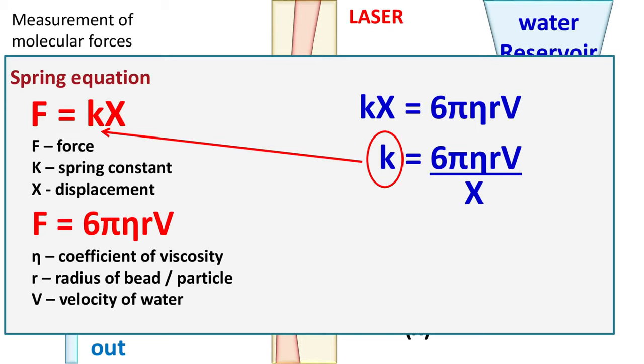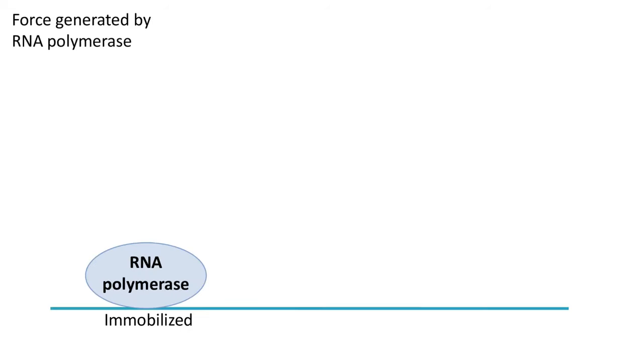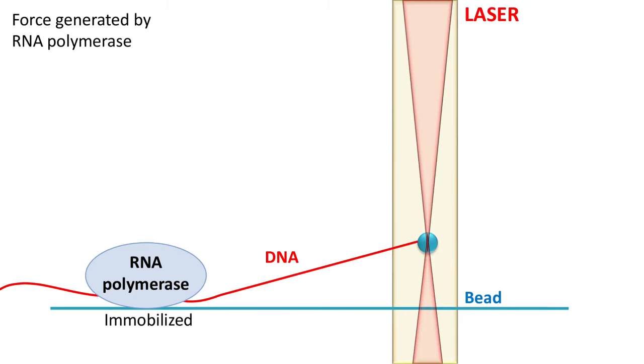The RNA polymerase is immobilized on glass slide and one end of the DNA is attached with the bead. Addition of buffer containing ribonucleotides will start RNA polymerization or the process of transcription.